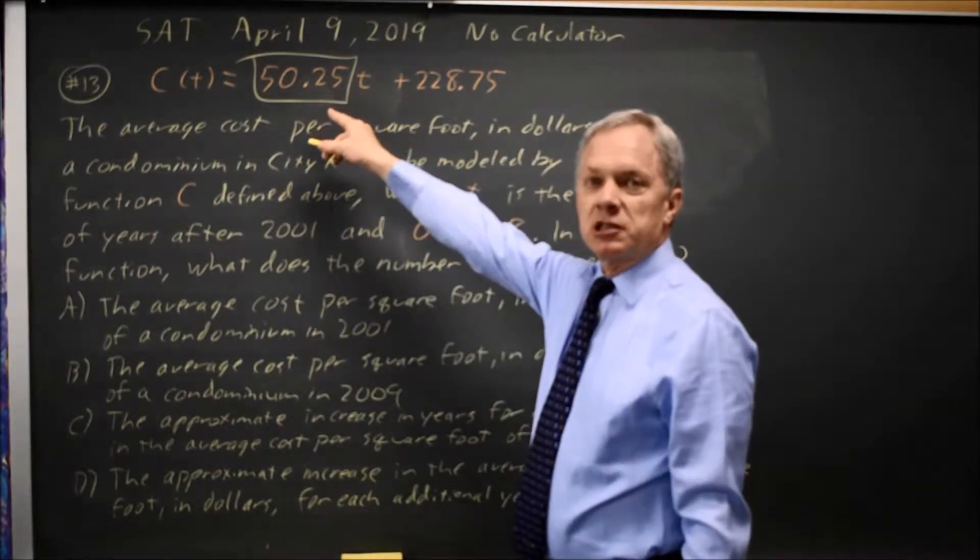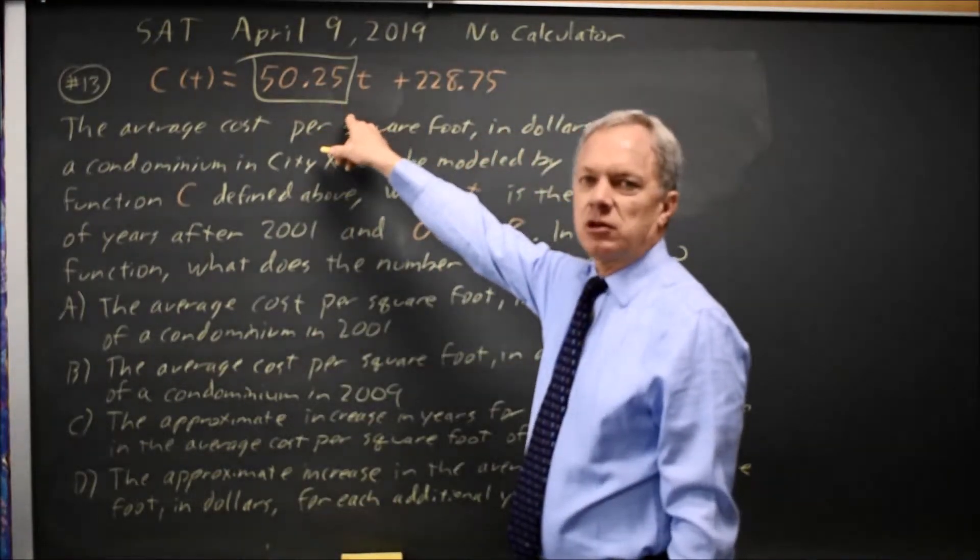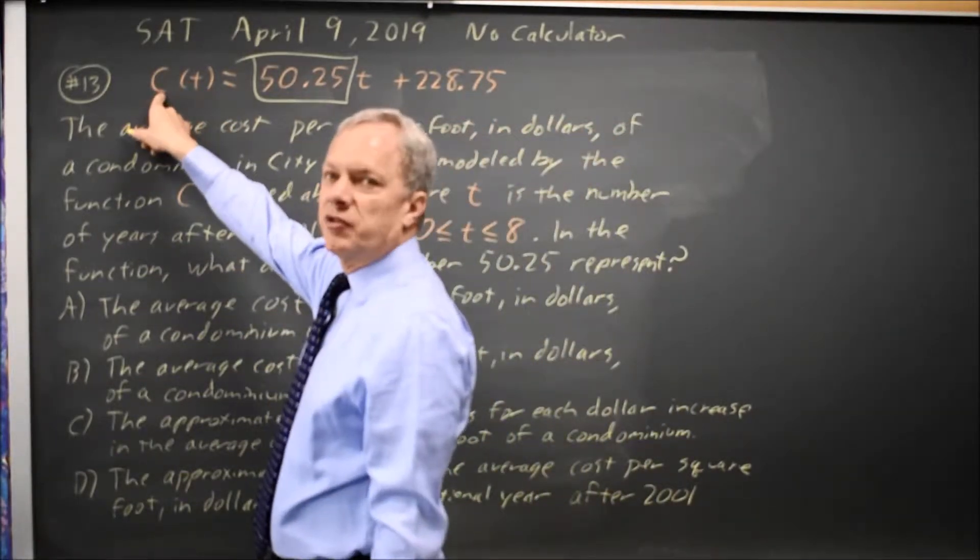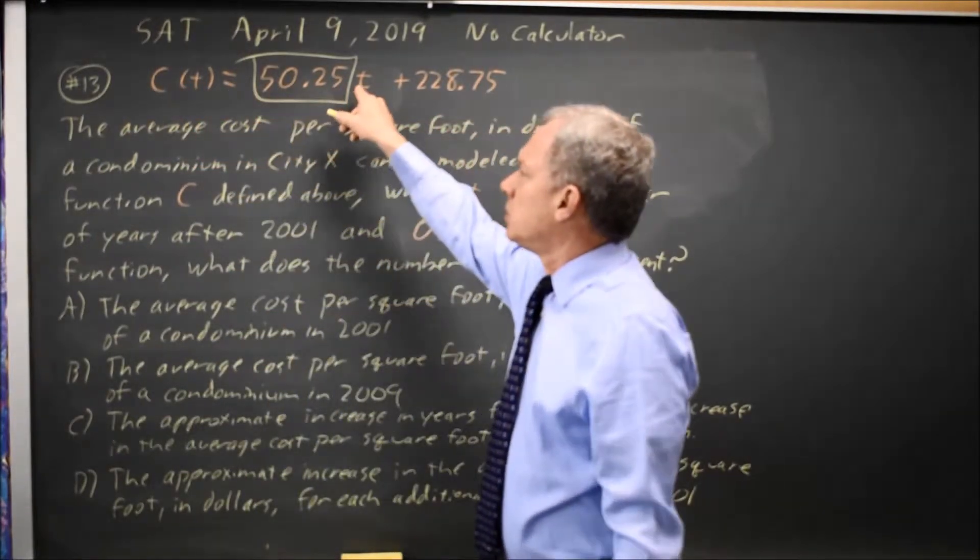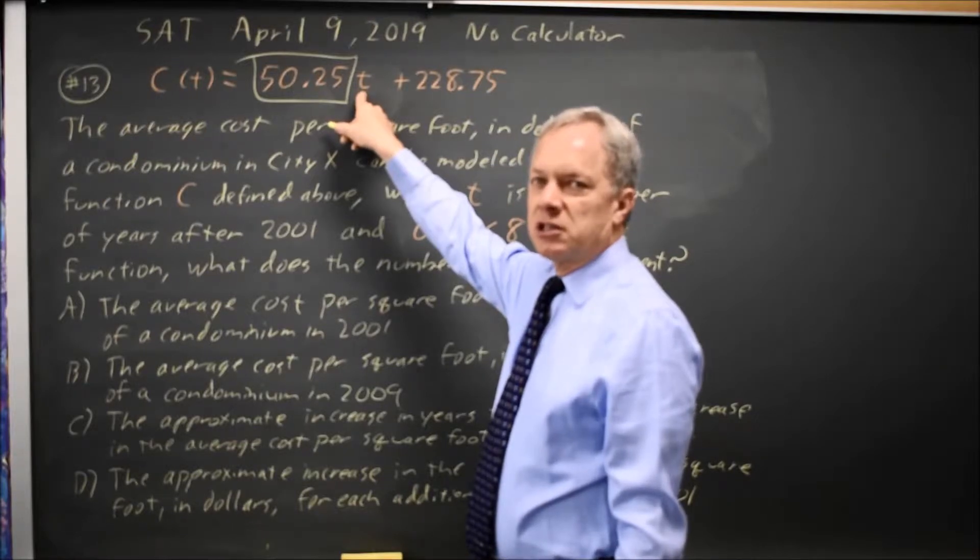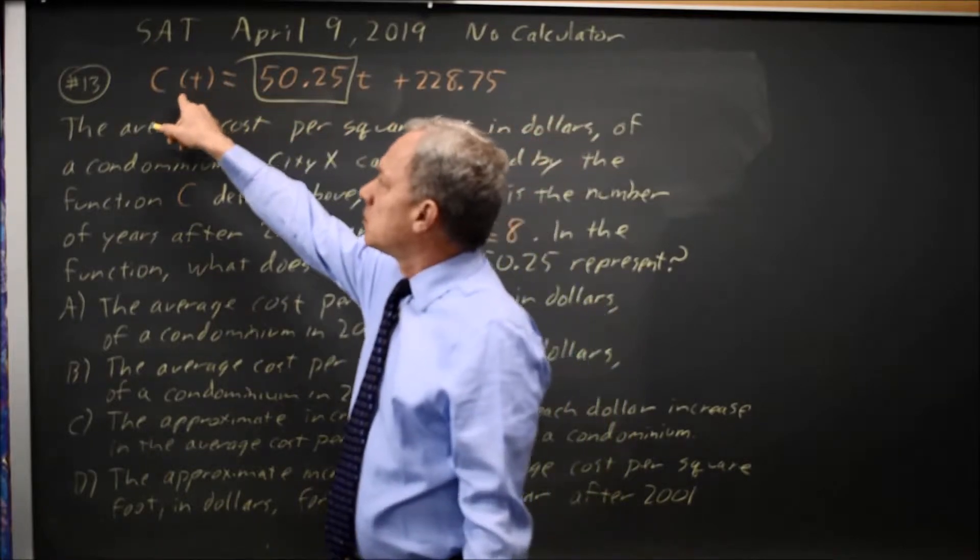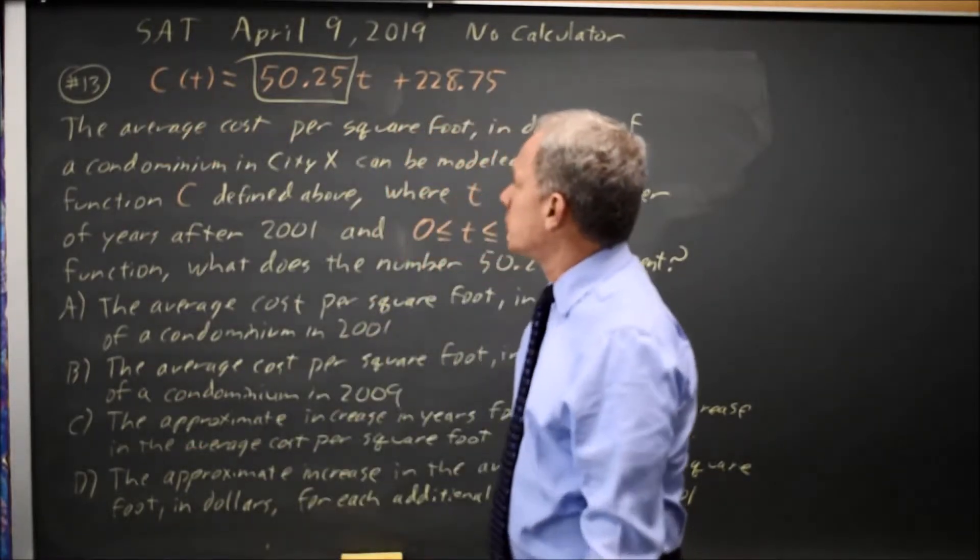In y equals mx plus b form, this is m, the slope. They're asking for the slope, and the slope is the change in the value of your function for each unit change in the value of your independent variable. So when t goes up by one,